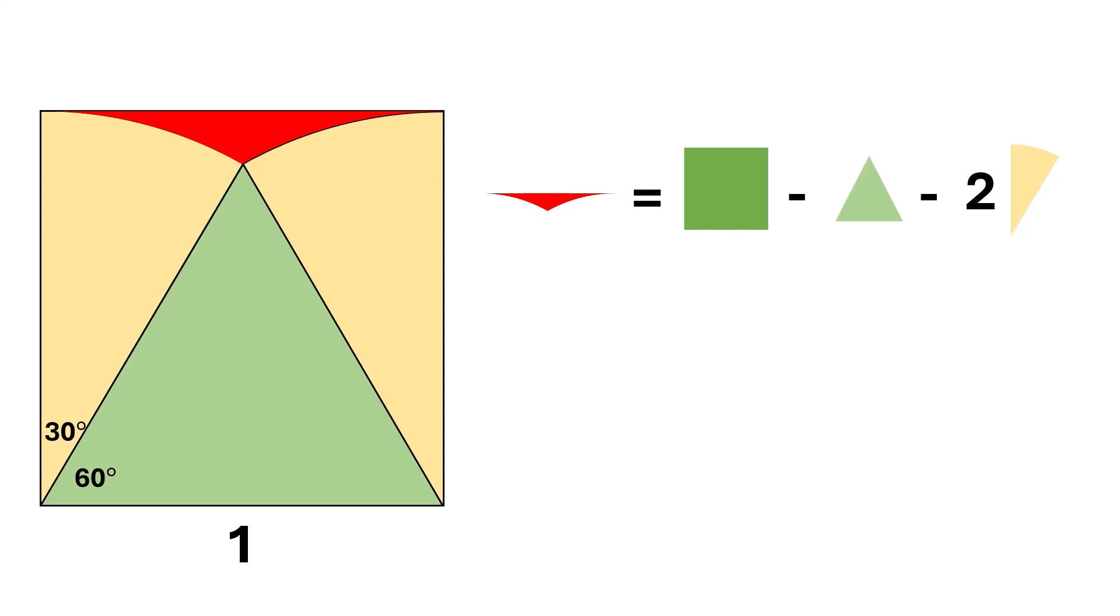Now, writing the formula of these known shapes we will get: The area of the red region is equal to the area of the square, a squared, minus the area of the equilateral triangle, square root of 3 over 4 times a squared, minus two times theta over 360 times pi times a squared.